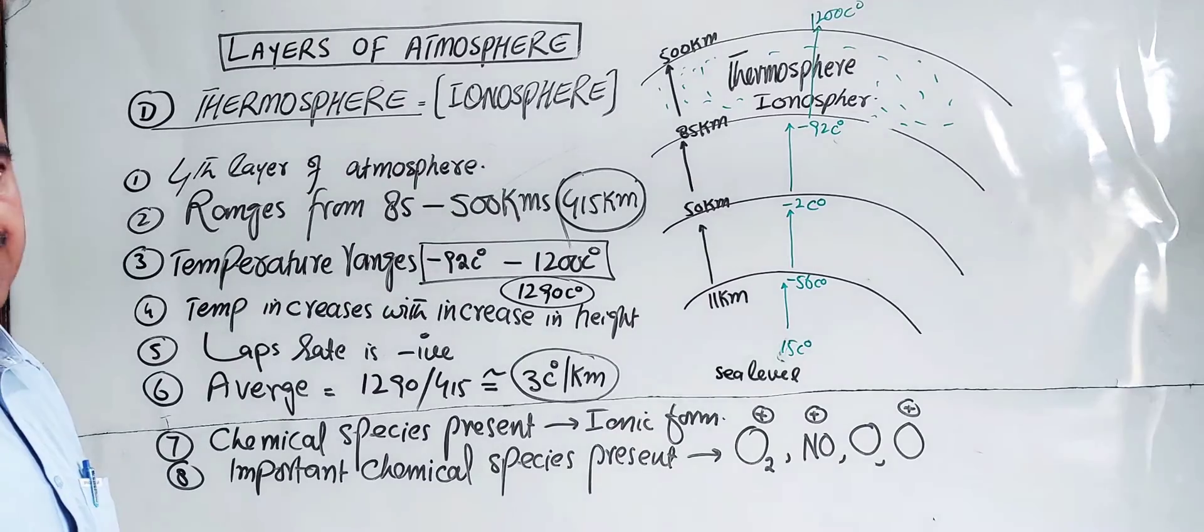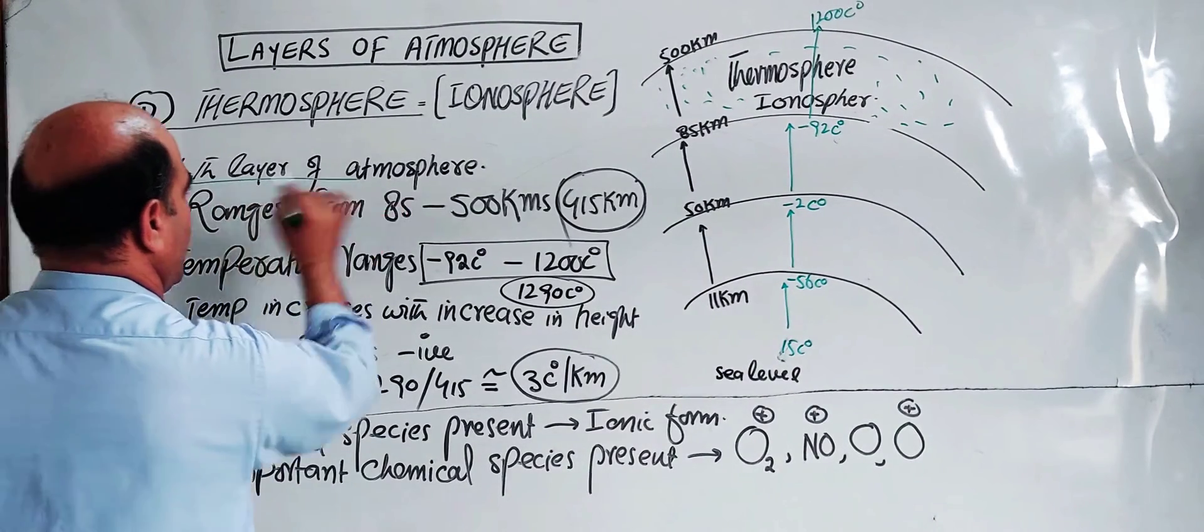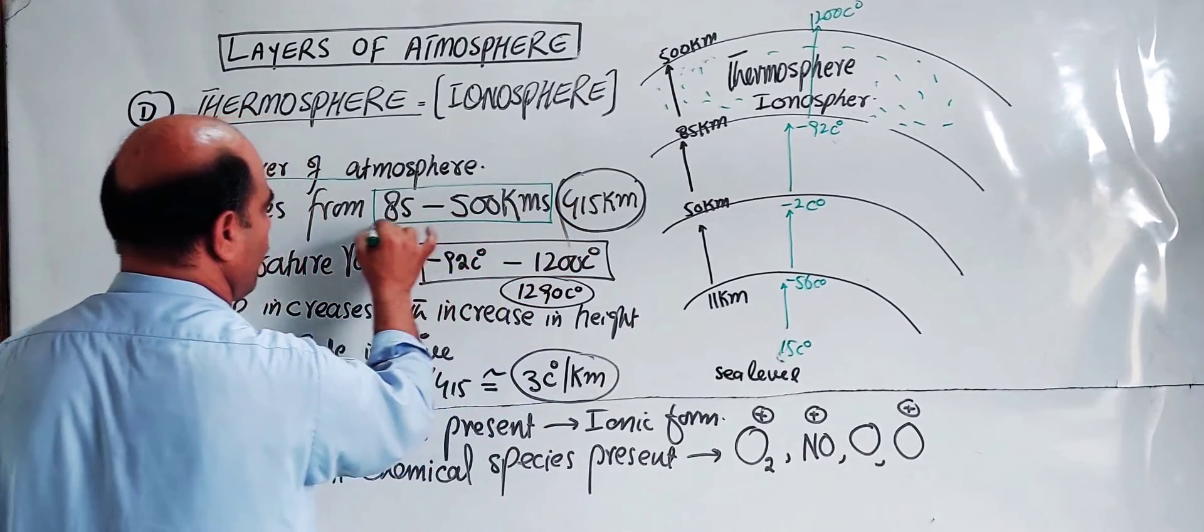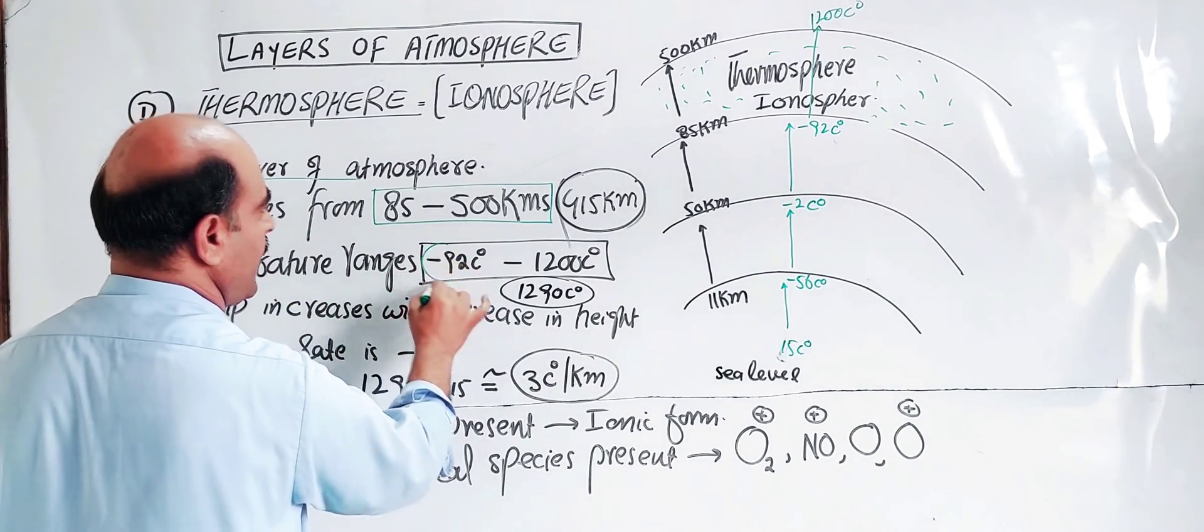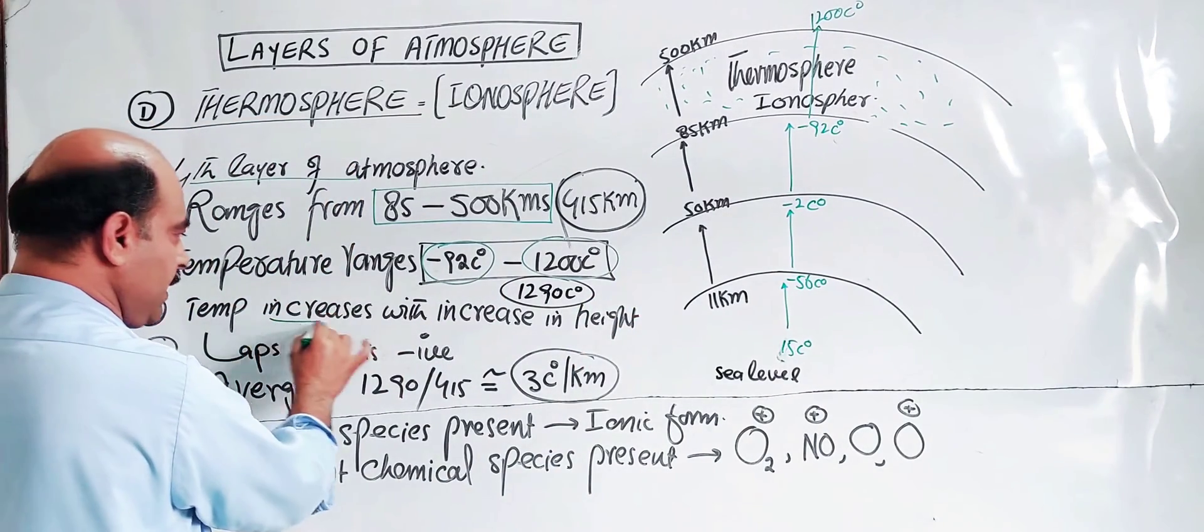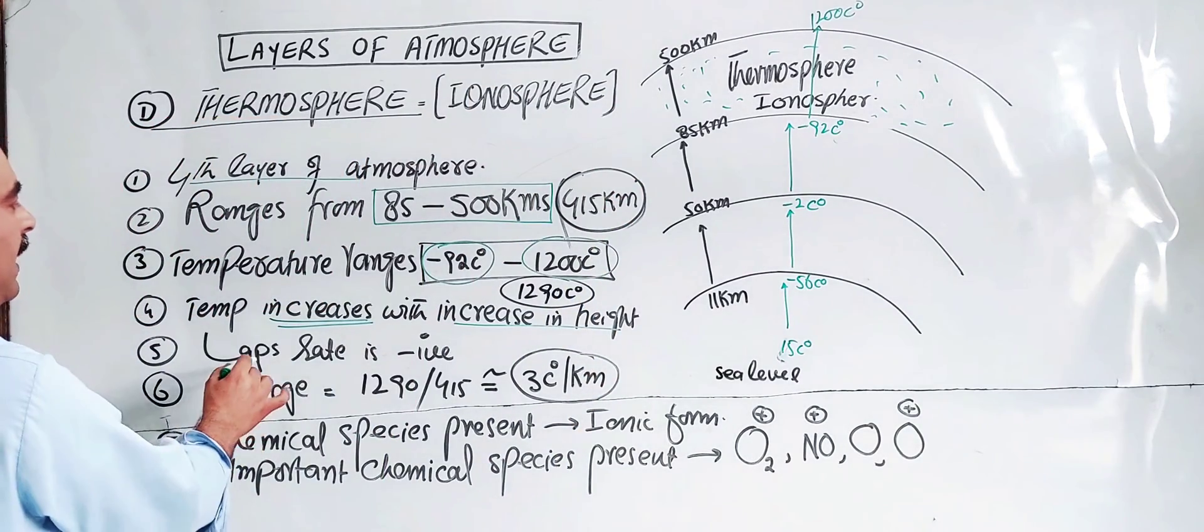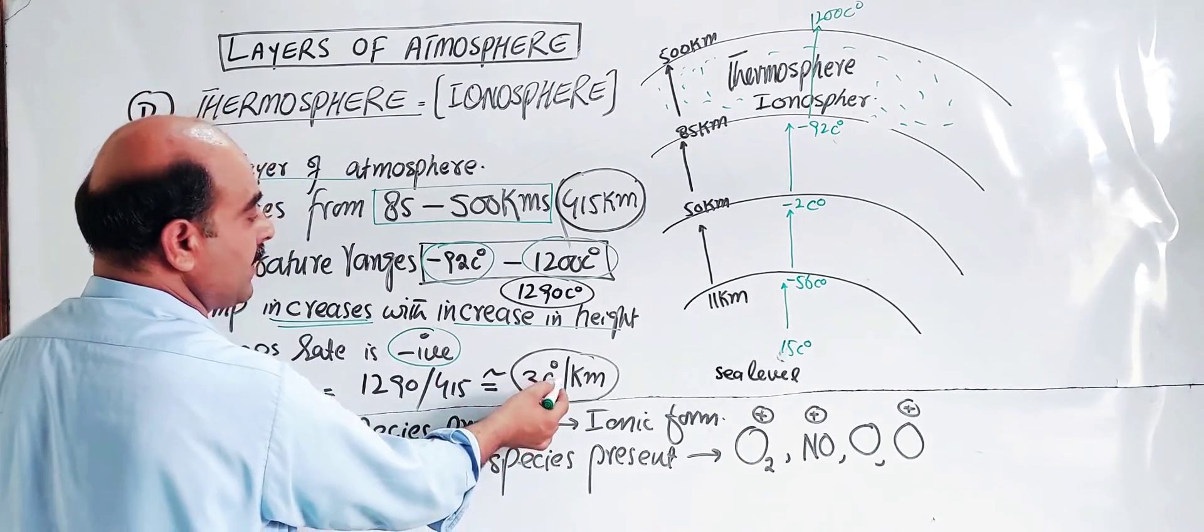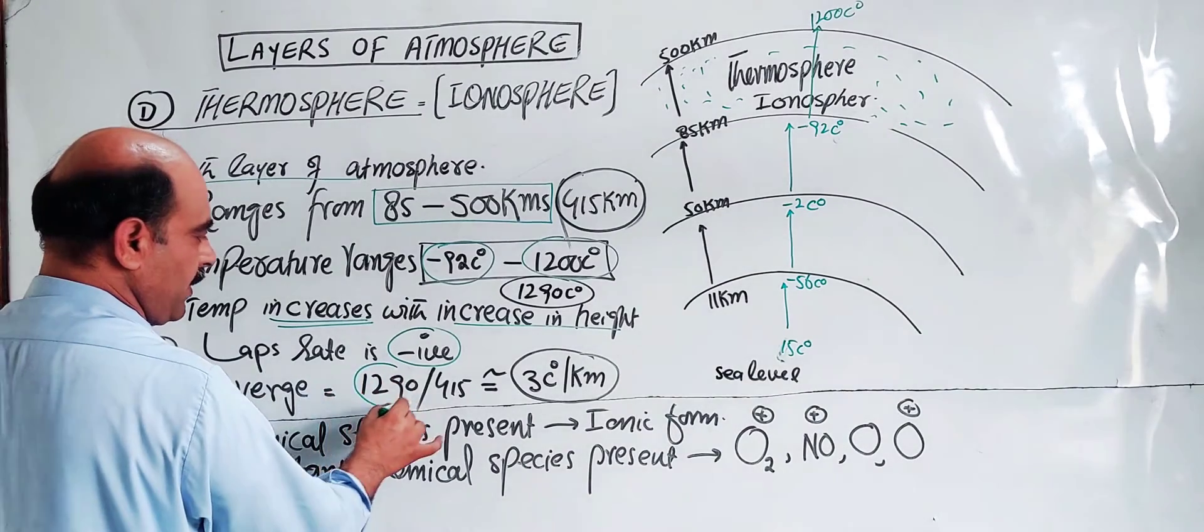So students, these are all about the characteristics of the fourth layer of the atmosphere. First, it is the fourth layer of atmosphere. Second, the range is 85 kilometers to 500 kilometers. Third characteristic: temperature range minus 92 degrees C to 1200 degrees C, and temperature increases with increase in height.